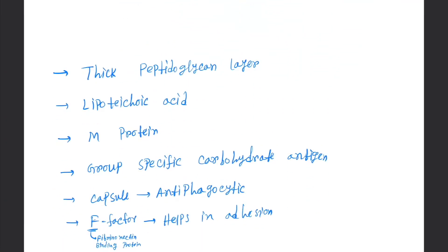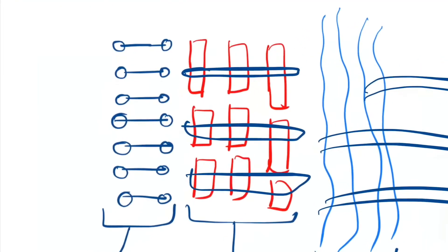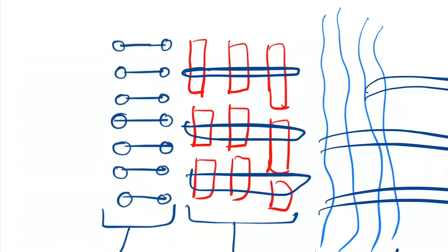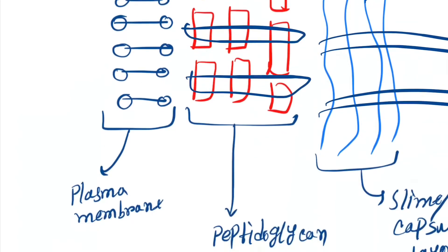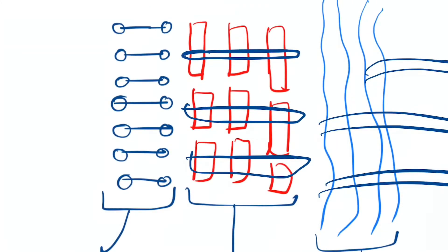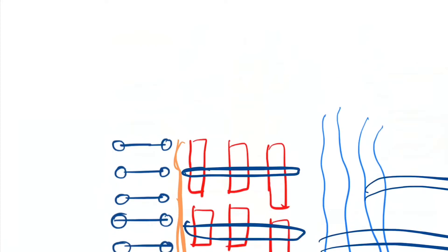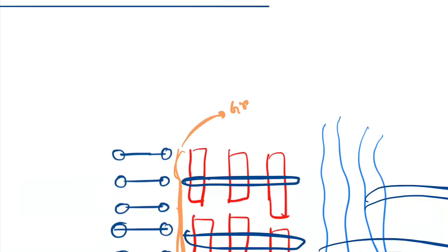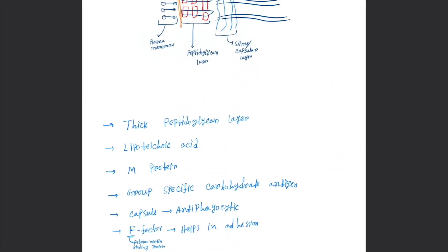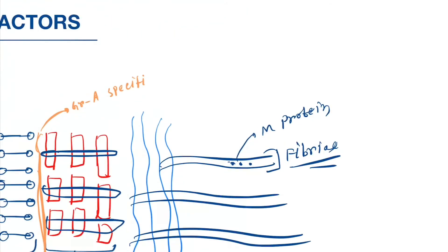Fimbriae. Now group-specific carbohydrate antigen, this is present between the peptidoglycan layer and the plasma membrane. So here are the structures. This is the group-specific carbohydrate antigen.